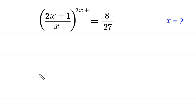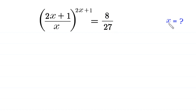Hello, welcome to how to solve this very nice exponential equation. The equation is: (2x + 1/x) to the power (2x + 1) is equal to 8 over 27. We need to find all possible values of x.